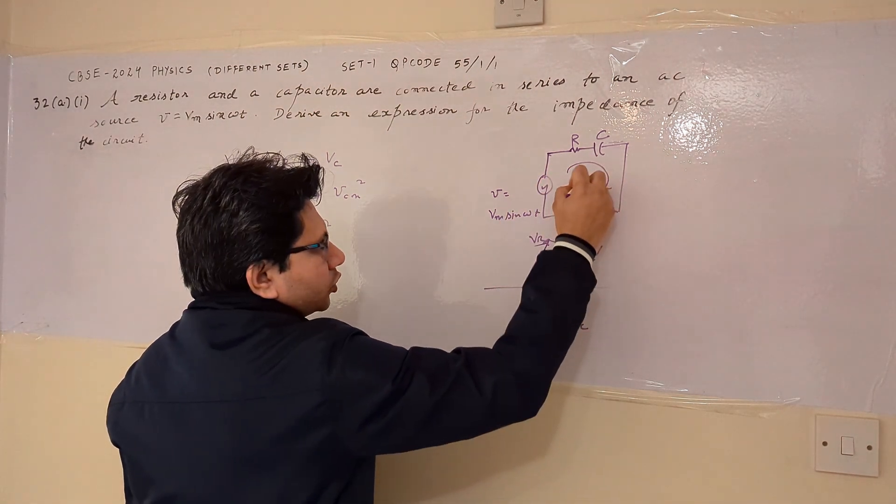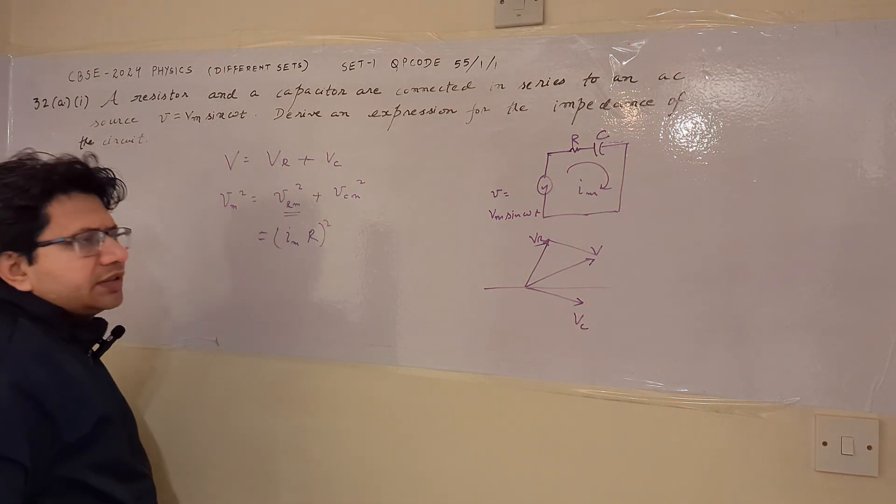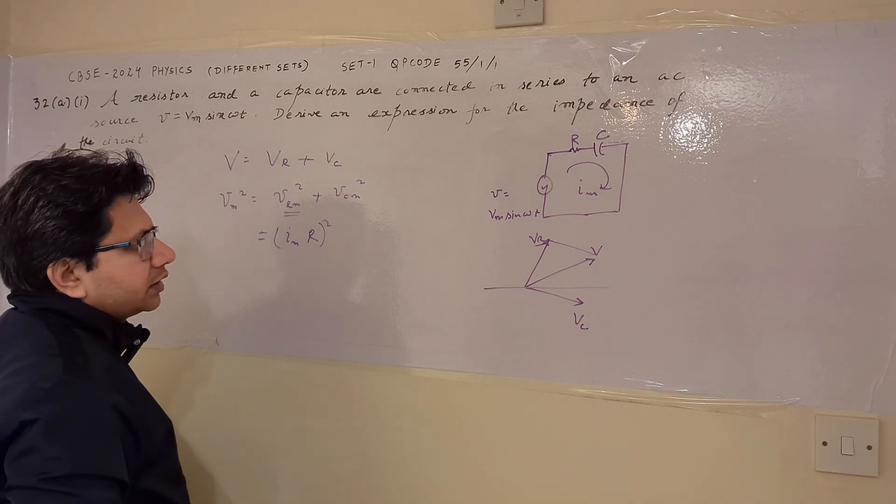Now the current is same throughout this particular loop because this is a series circuit, because R and C are connected in series.